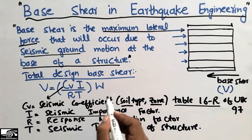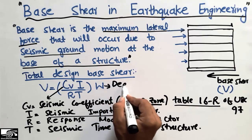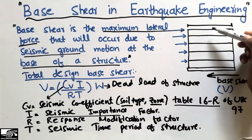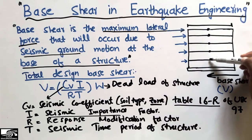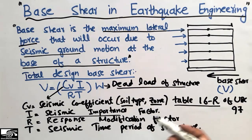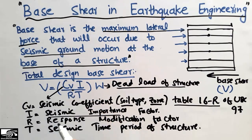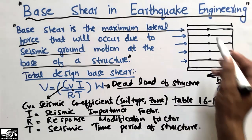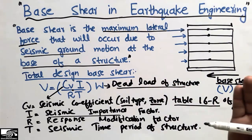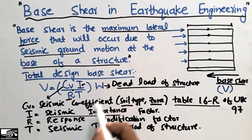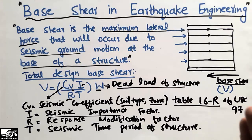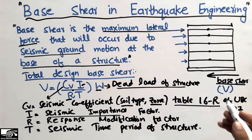W is the total weight of the structure, equal to the total dead load. Each floor has different dead loads, and adding all these loads gives the total dead load W. By putting all these values from the tables or calculations into the equation, you find how much base shear is required for that building. Each building has a different base shear because soil type, zone, R-factor, importance factor, and dead load all differ.